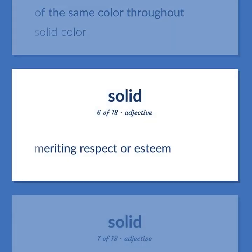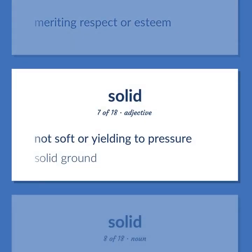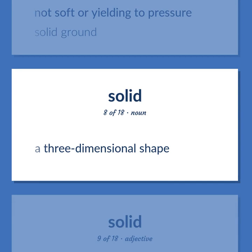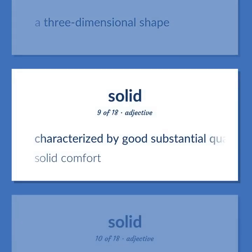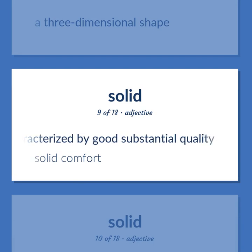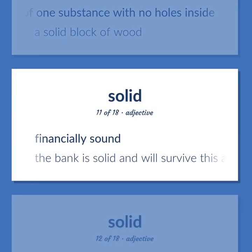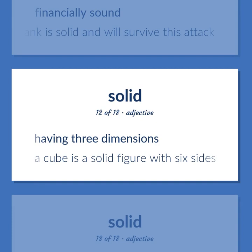Solid (continued): meriting respect or esteem. Not soft or yielding to pressure — solid ground. A three-dimensional shape. Characterized by good substantial quality — solid comfort. Entirely of one substance with no holes inside — a solid block of wood. Financially sound — the bank is solid and will survive this attack. Having three dimensions — a cube is a solid figure with six sides.